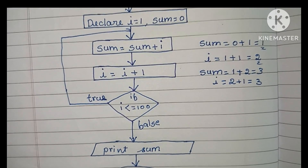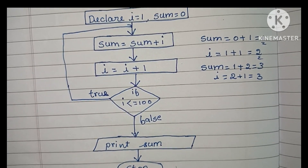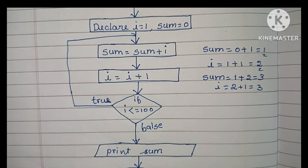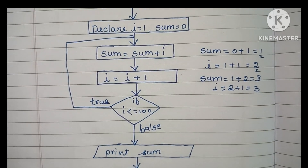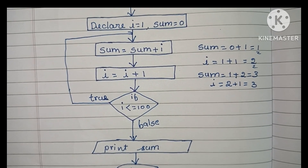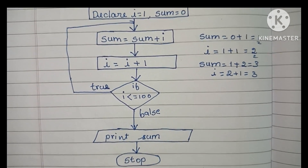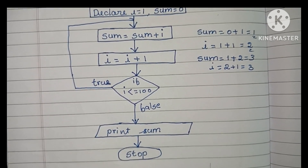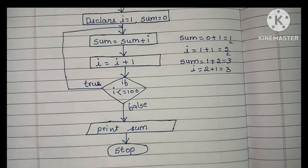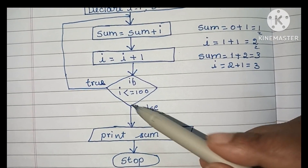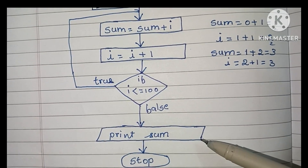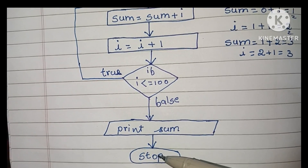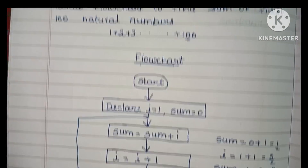Then we increase i by 1 (i = i + 1) and check if i ≤ 100. The condition is written inside a diamond shape. If true, we go back to the sum calculation and repeat. If false, we exit the loop and print the output sum value. Finally, we stop the flowchart using the STOP statement.